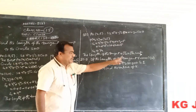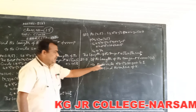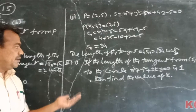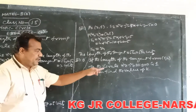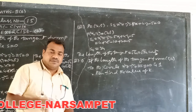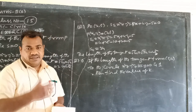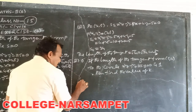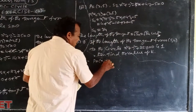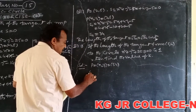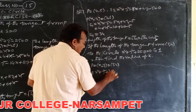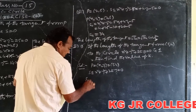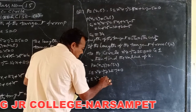If the length of the tangent from the point (5, 4) to the circle x² + y² + 2ky = 0 is 1, then find the value of k. The given point coordinates: (x₁, y₁) = (5, 4) and the circle S = x² + y² + 2ky = 0. First we find S₁₁: x₁² + y₁² + 2ky₁.